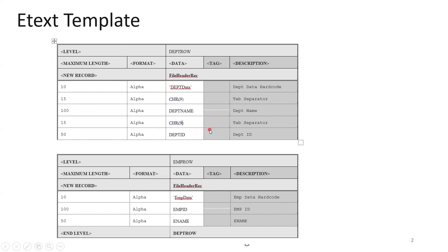We can't mention the tab character directly — we have to use the ASCII character, so we use chr(9) which is a horizontal tab character. This is the parent data department row. For every record, we display a hardcoded value called 'department data', then a tab separator, then the department name column, then tab separator, then the department ID.